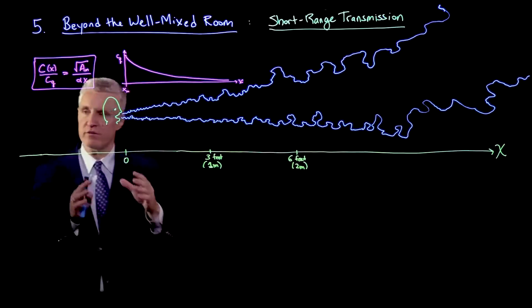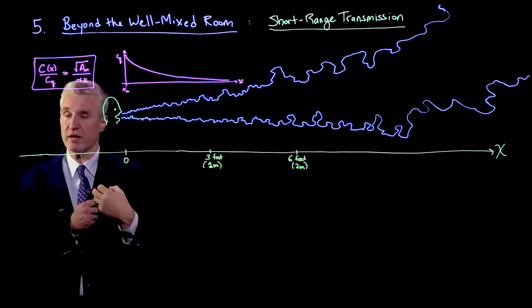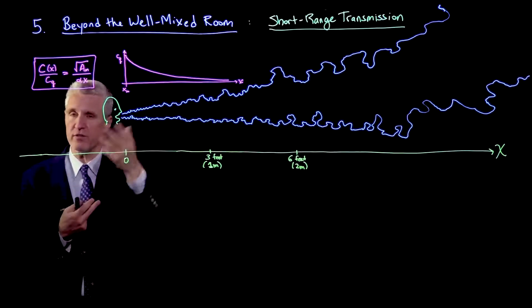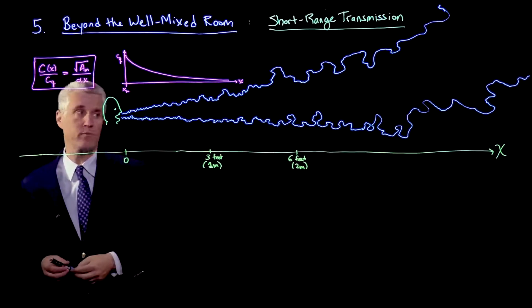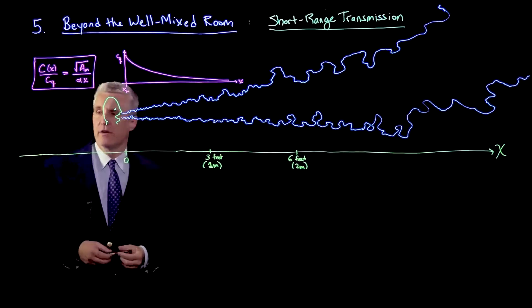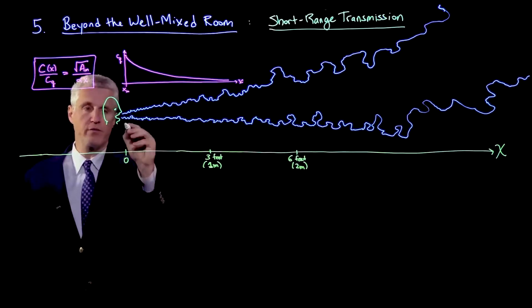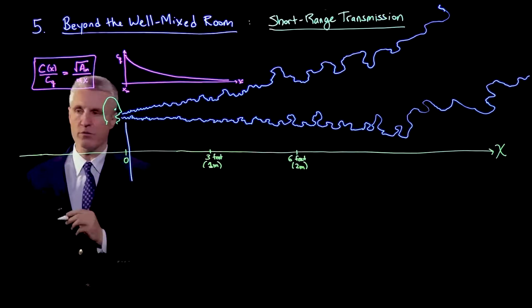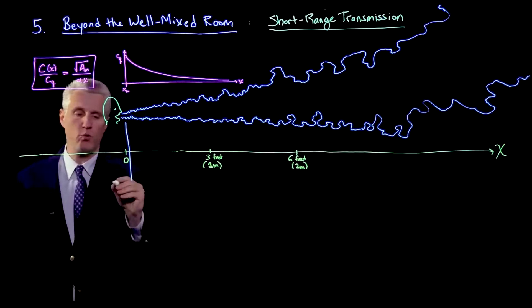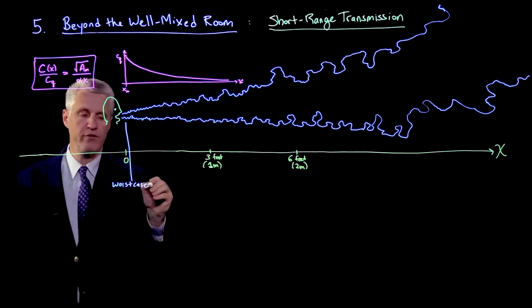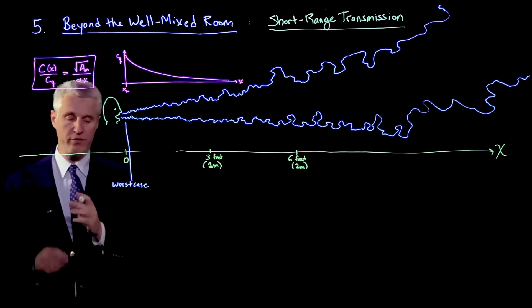I'd like to talk about the difference between short range transmission due to placing yourself in this jet and breathing that air directly, which is more concentrated than the background, and compare that with transmission in the well-mixed room. Obviously, if we're at position zero right at the mouth, perhaps one inch or one centimeter away, that is the worst case scenario of short range transmission. That is much worse relative to the background room.